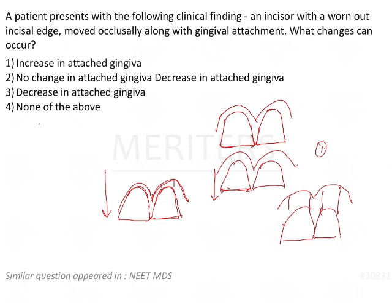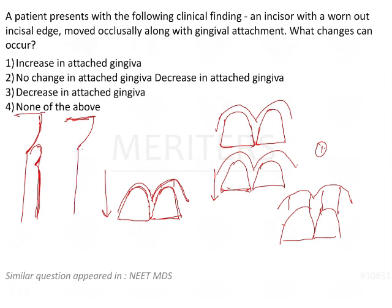Now let's look at this from a lateral view. This is the clinical crown height and this is the gingiva present. After wearing out and due to passive eruption, this is the gingival groove and this is the attached gingiva. The tooth has moved occlusally and the gingiva has also moved along with it. The groove remains in position, but the attached gingival width has increased — from here to here — whereas before it was only so much.